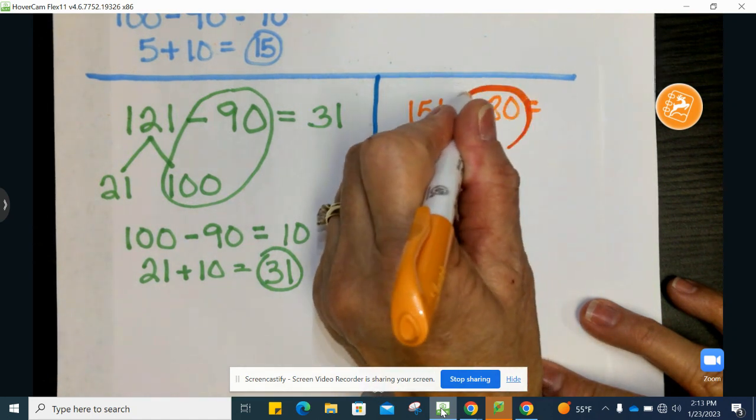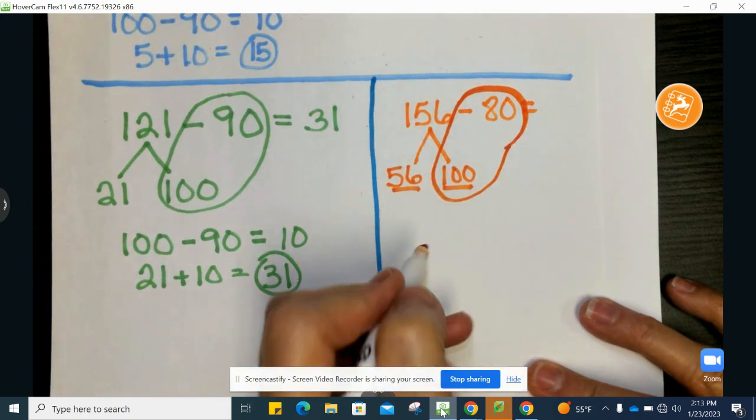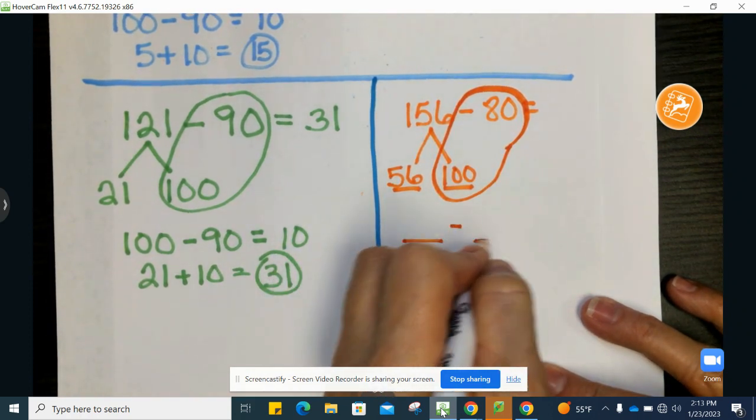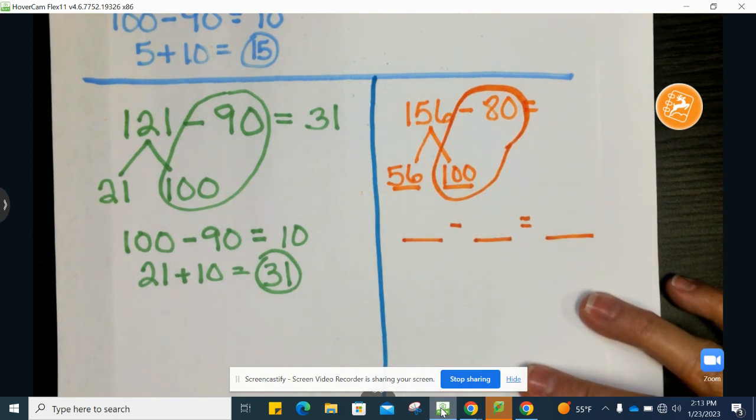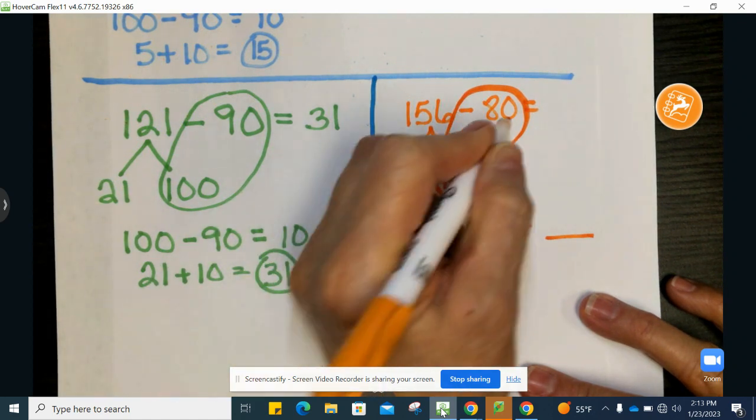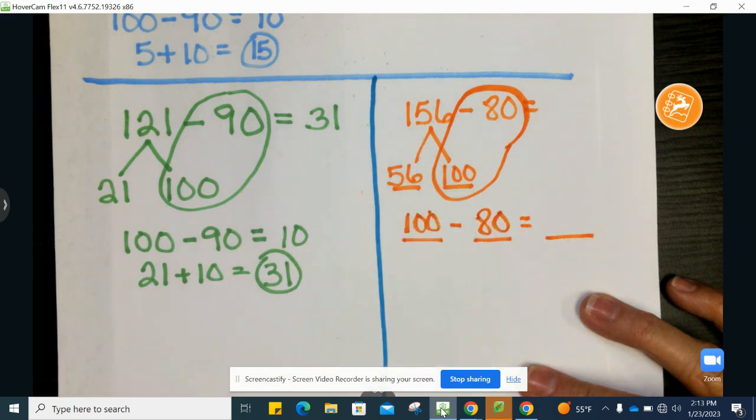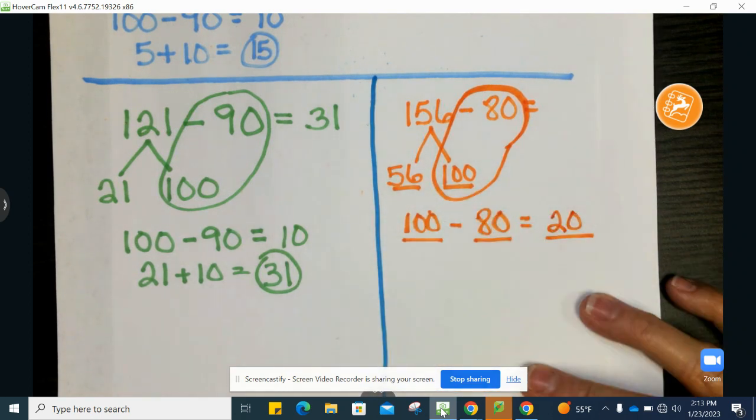Next step, I'm going to circle. I want you to write down those numbers that you are subtracting. And did you write 100 minus 80? And 100 minus 80 equals 20.